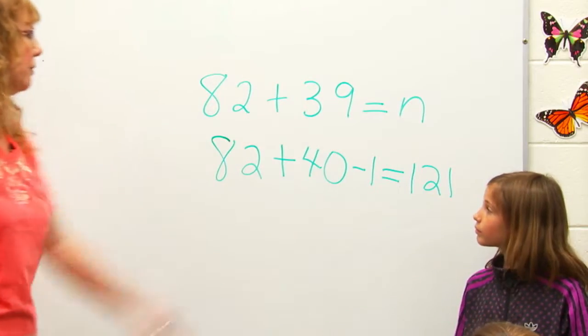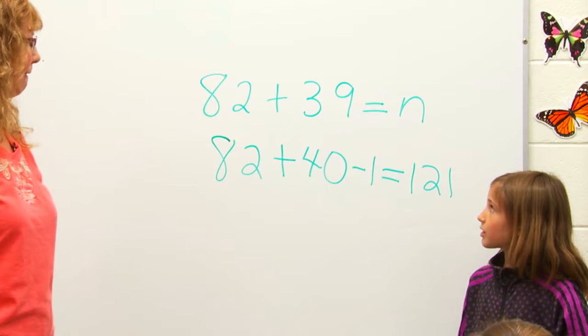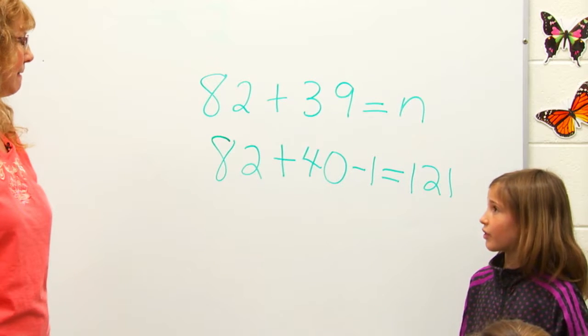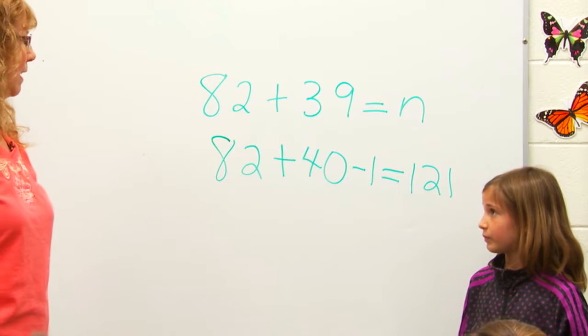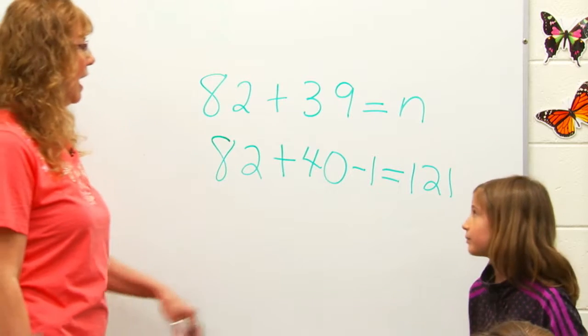Compensation is a good strategy to use when a number you are using is close to a friendly 10. Here, 39 is close to 40.